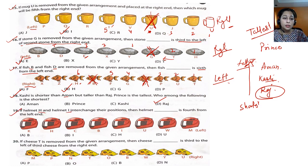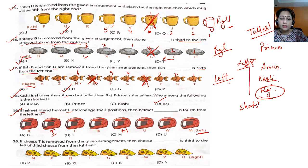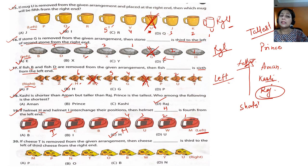Question 19: if helmet H and I are interchanged, then which helmet is fourth from the left end? Let's interchange — this becomes I and this becomes H. Fourth from the left: one, two, three, four — helmet H is the answer. Option C is correct for question 19.